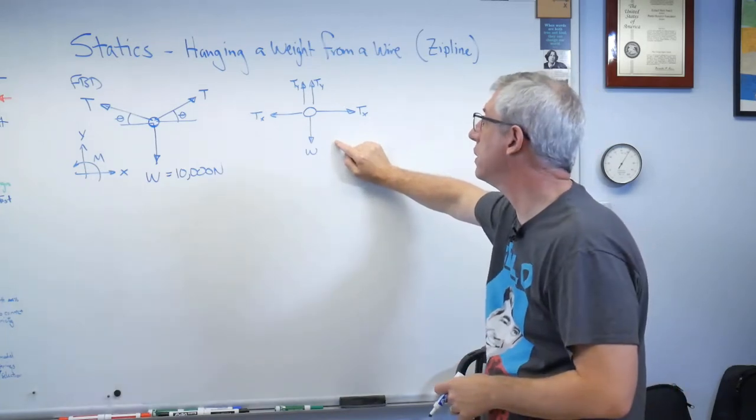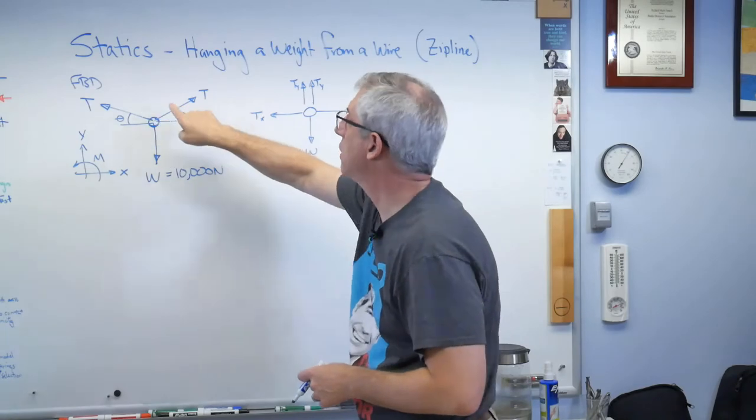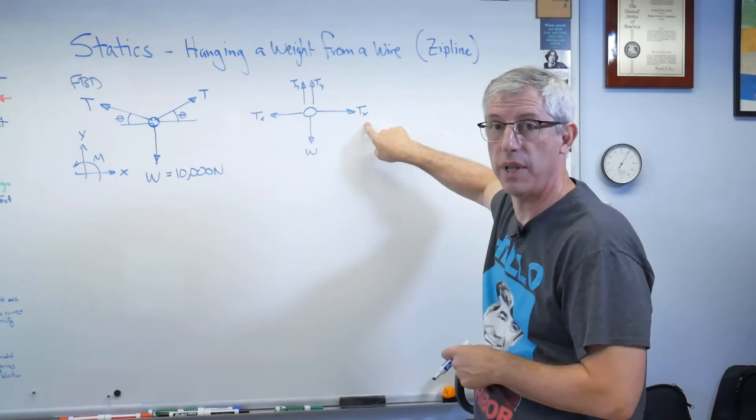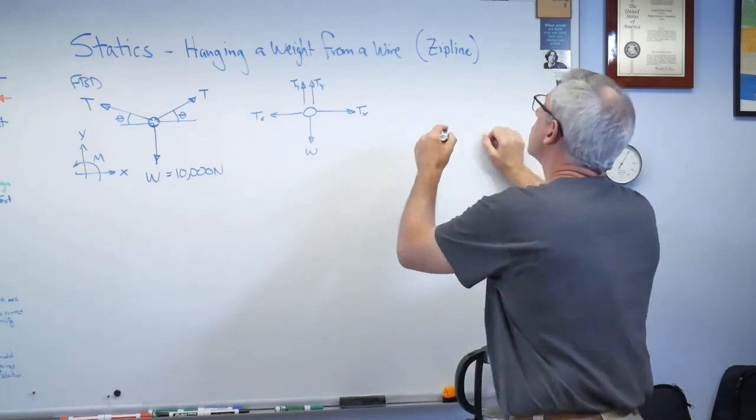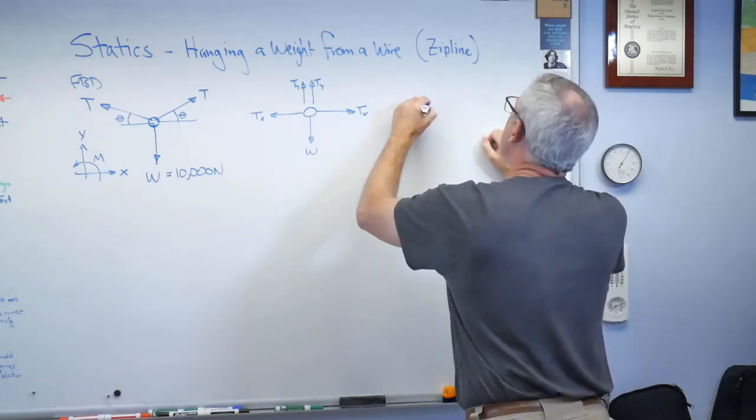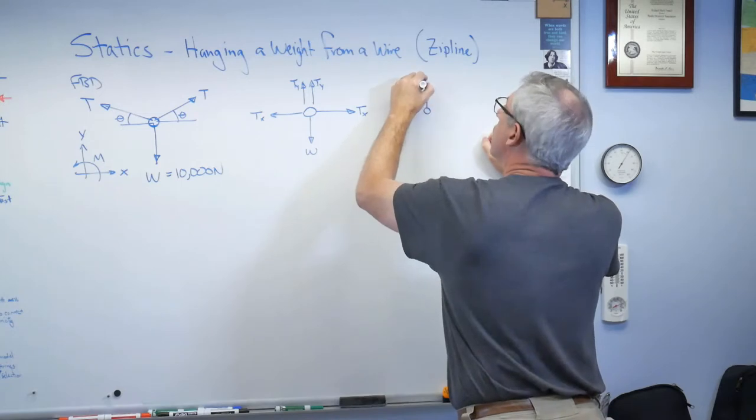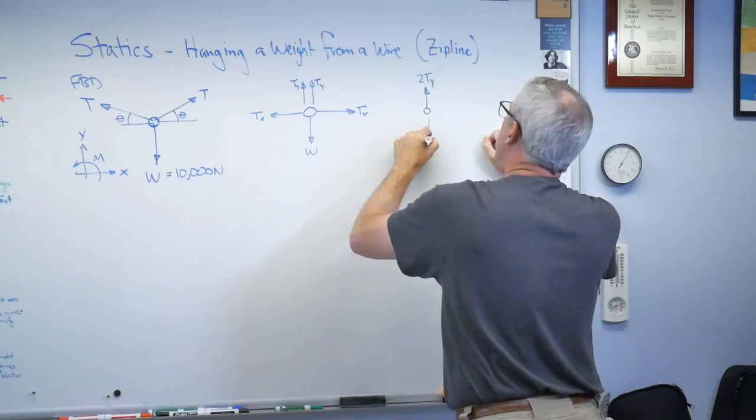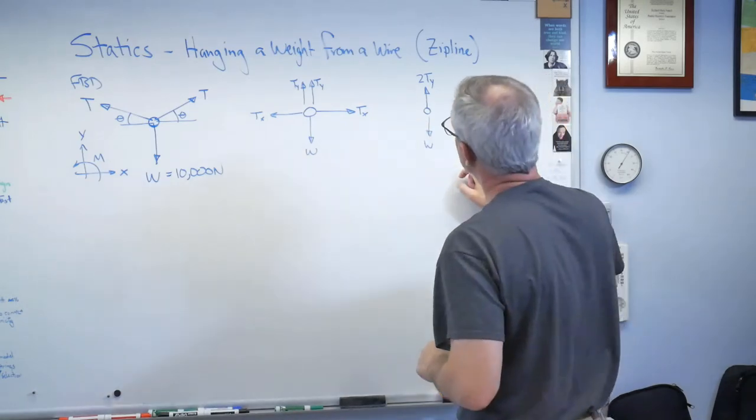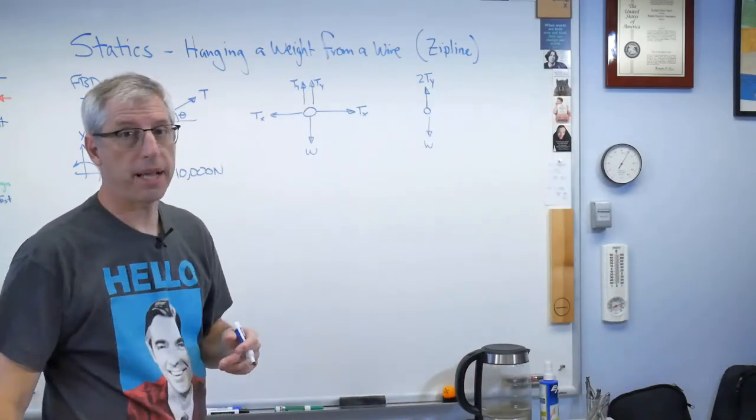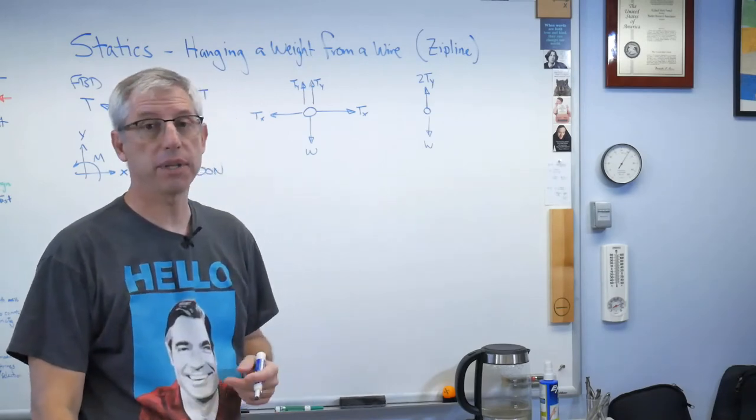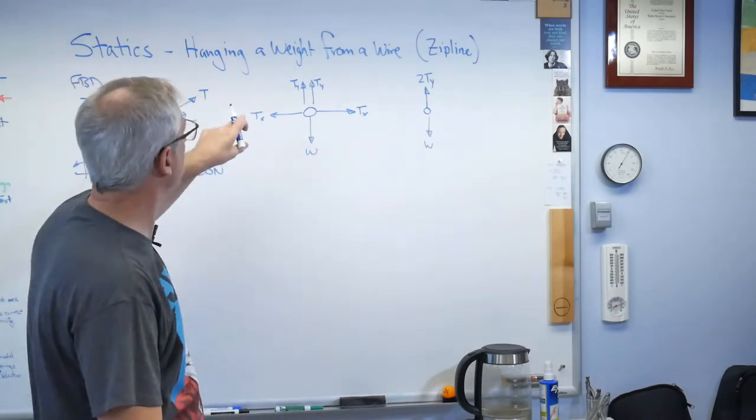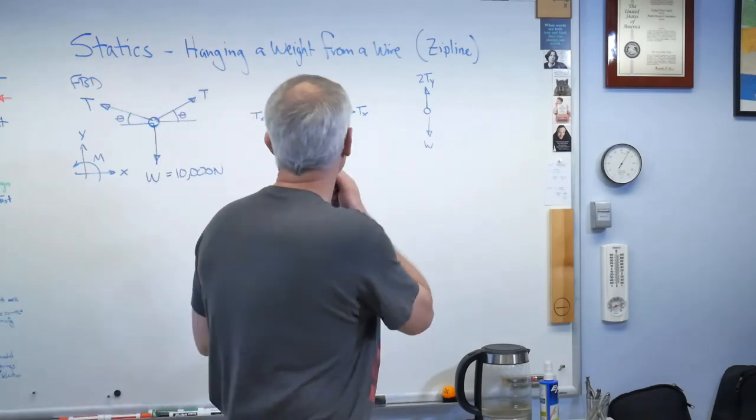Now I can start writing equations. Because tension is the same on both, I know that tx in that direction and tx in that direction are the same, so that really cancels out. So all I need to do is I know that 2ty, both of those, has to equal the weight. That's about as simple as free body diagrams get.